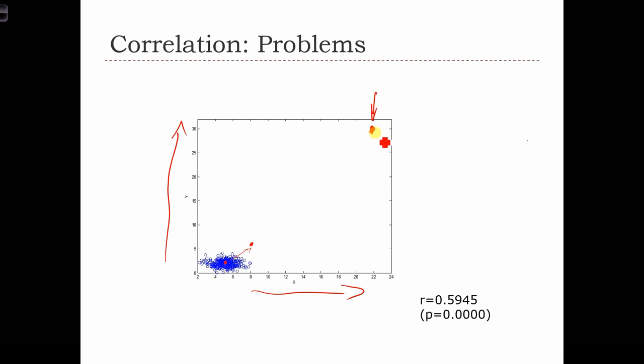But what we are going to have with this point, let's call this point k, is that the cross product of point k, so xk minus x bar times yk minus y bar, this cross product is going to be really, really positive. So this is going to be a really high positive number.